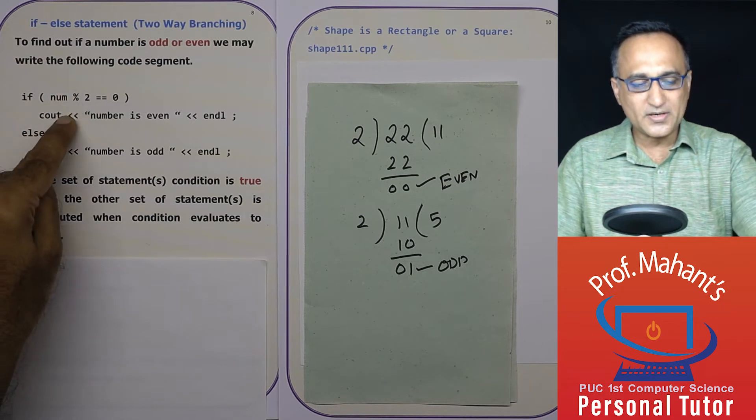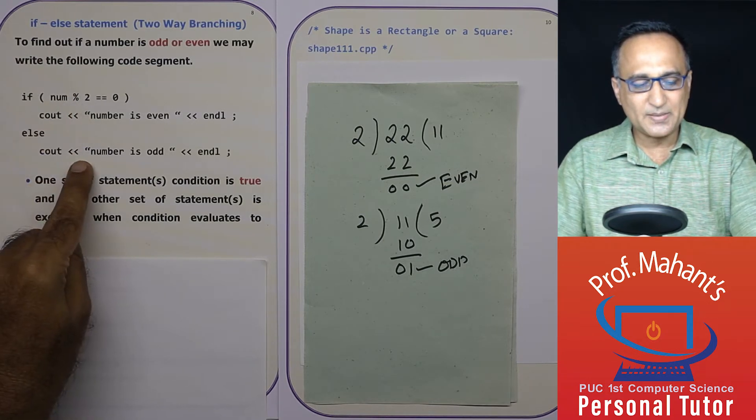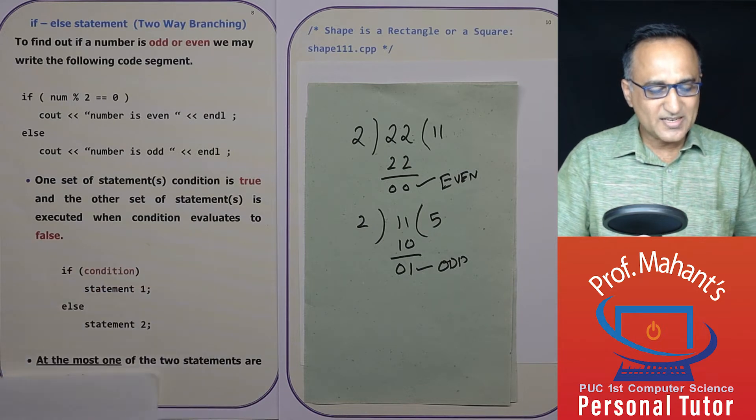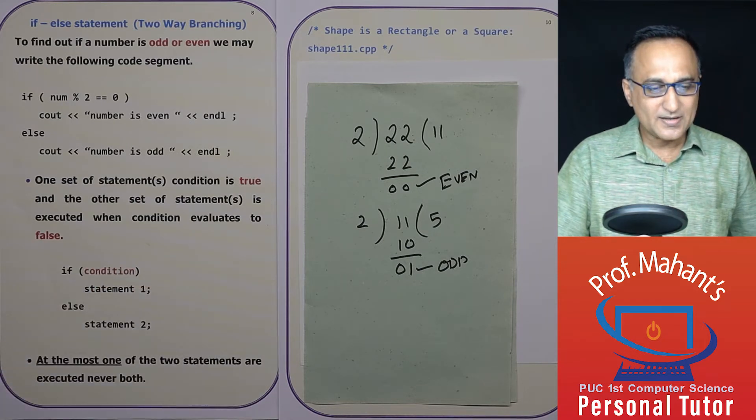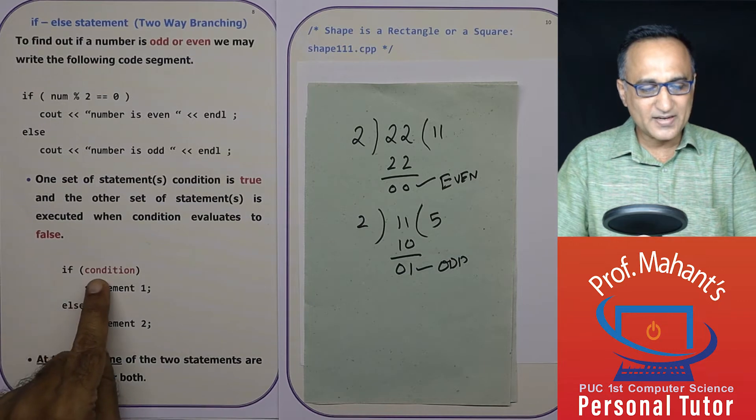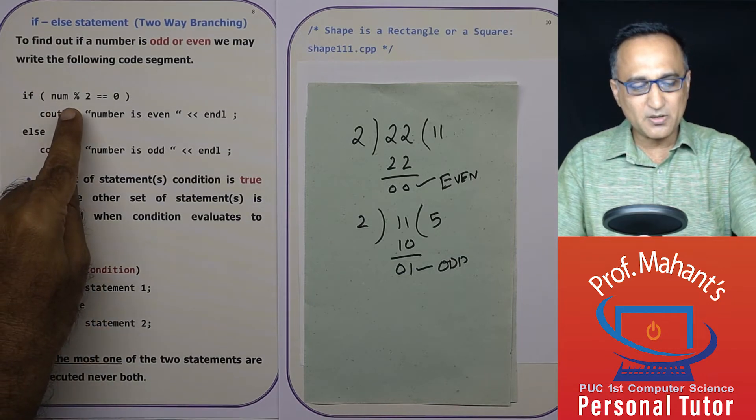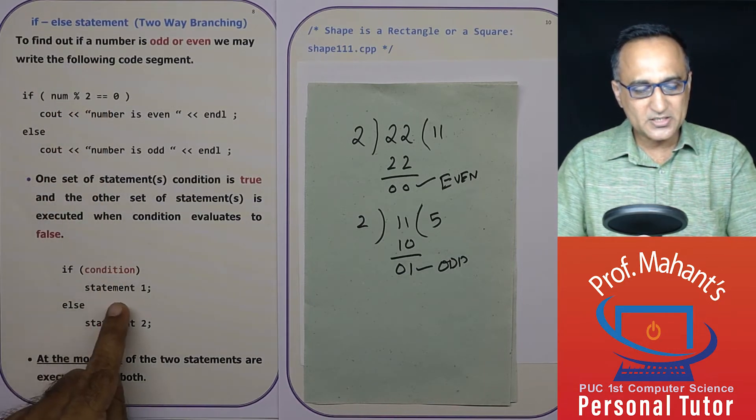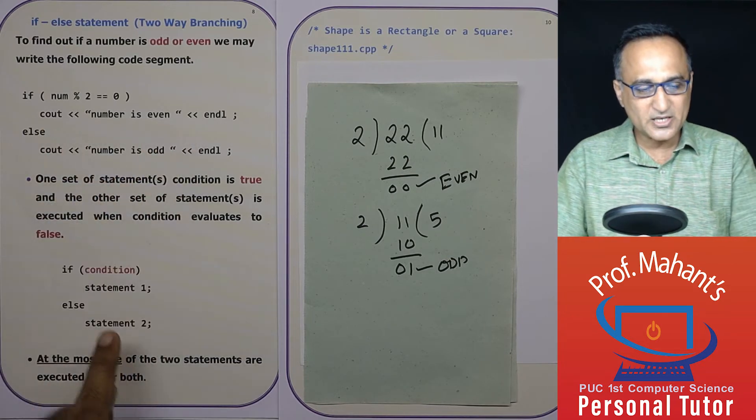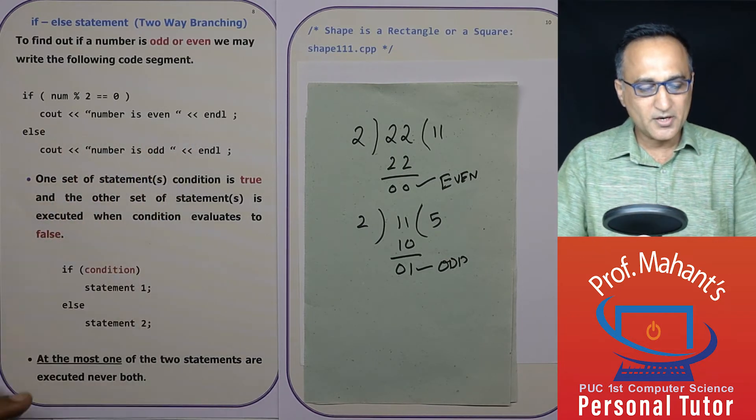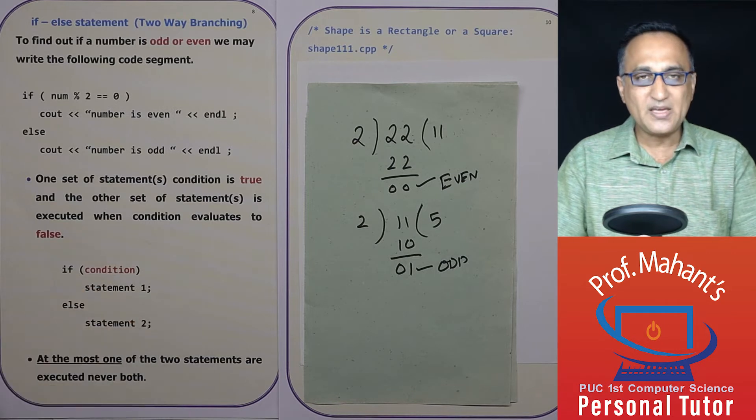So if it is true, it is this one. If it is false, it is this one. Now the general syntax for the if-else is if condition—condition in our case is number mod two equal to zero—statement one is cout number is even, statement two is number is odd. So either of these statements will be executed.